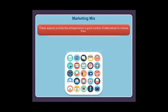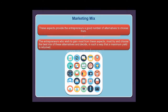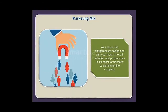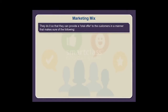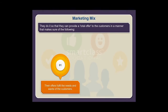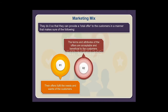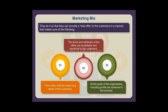These aspects provide entrepreneurs a good number of alternatives to choose from. Entrepreneurs who wish to gain most from these aspects must try and choose the best mix of alternatives so that a maximum yield is returned. As a result, entrepreneurs design and carry out most, if not all, activities and programs to win more customers. They do so to provide a total offer to customers, ensuring their offers fulfill needs and wants, that the terms and attributes are acceptable and beneficial, and that all organizational goals including profits are achieved in the process.